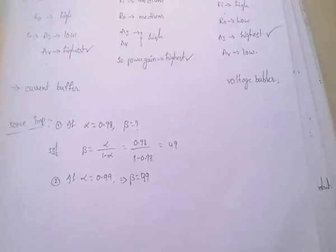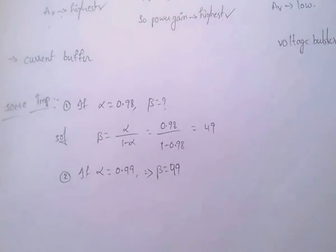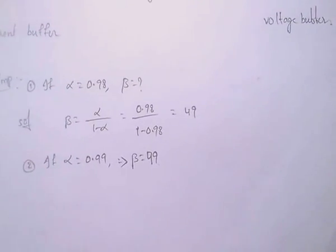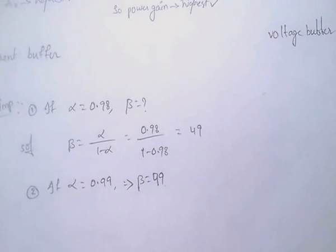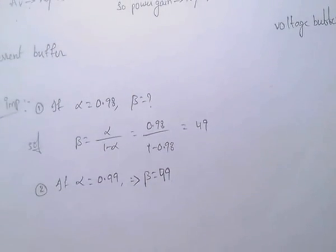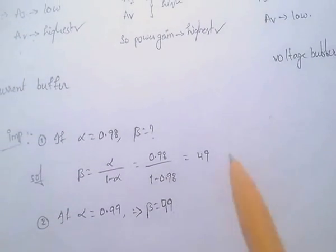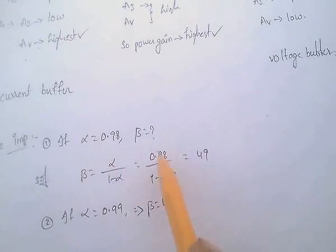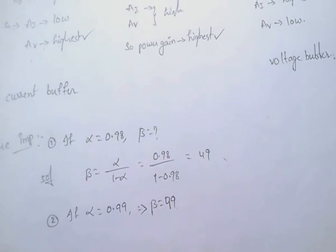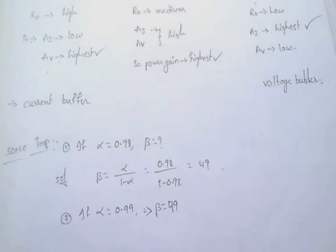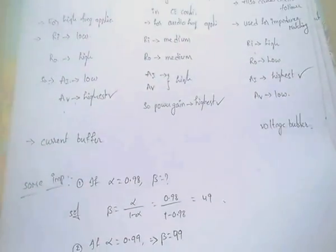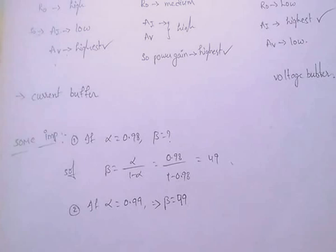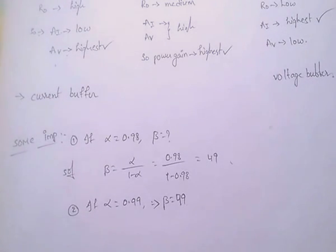Some example problems are very important. Given an alpha value, to find beta: use beta equals alpha divided by (1 minus alpha). Substituting the alpha value gives the beta value. Thank you friends — in the next video I will discuss remaining topics of electronic devices.